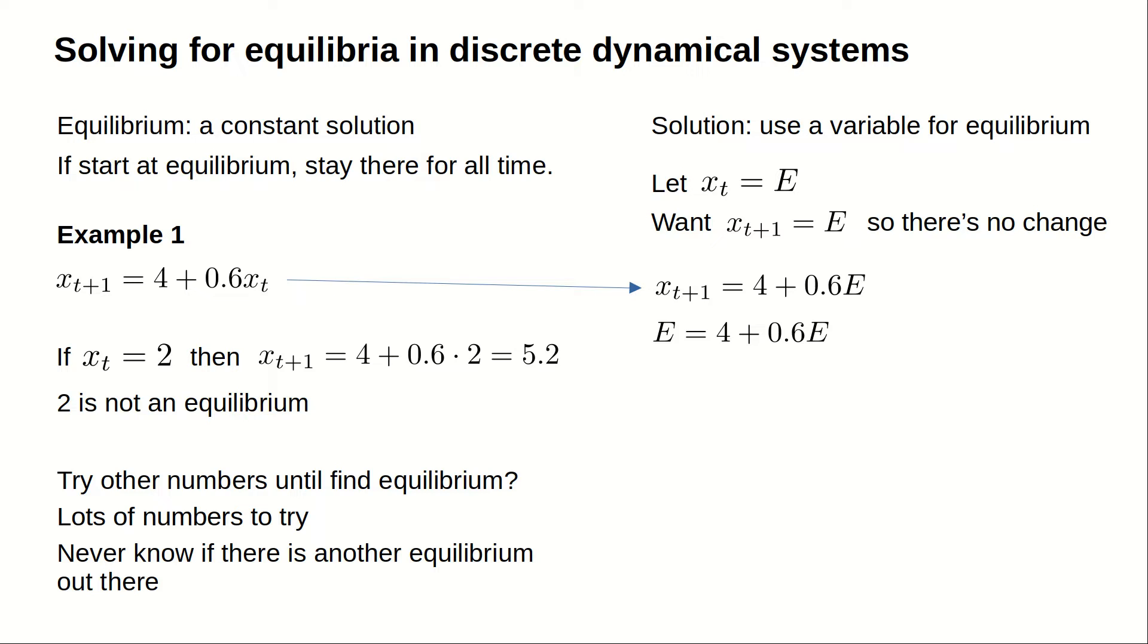In other words, we need 4 plus 0.6E to be equal to E. If we can find a number E for which E equals 4 plus 0.6 times E, then E is an equilibrium.